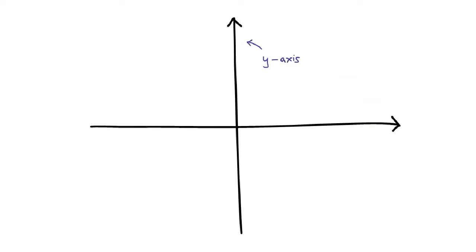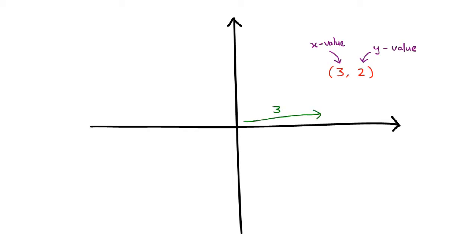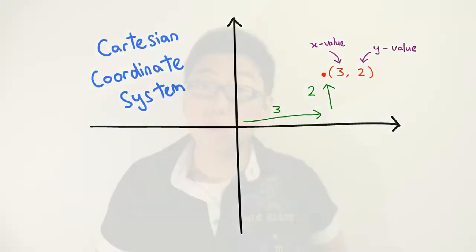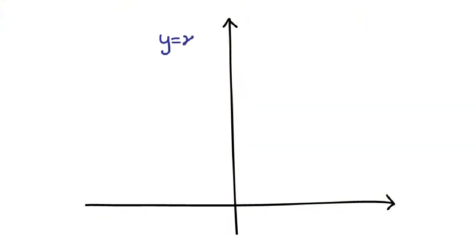So let's jump right into the math. Now if you've ever done anything that has to do with graphing, this will not be new to you. When you want to plot a graph, you have two axes: the x-axis and the y-axis. You have a coordinate which has an x and a y-value. The x-value determines how much horizontal displacement there is and the y-value determines the vertical displacement. This system is called the Cartesian coordinate system — it's what we use in school all the time.